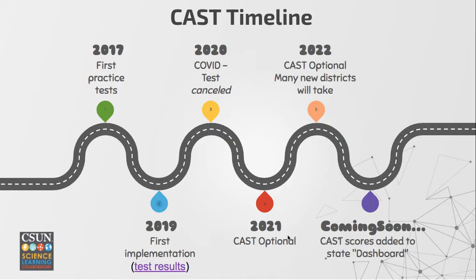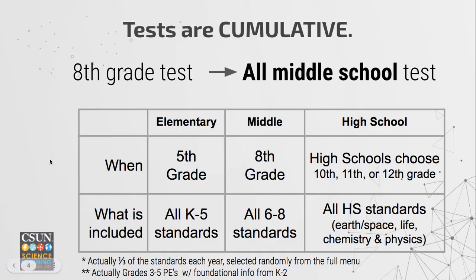In 2021 it was optional but many districts chose not to take it. This time around it's optional in 2022 but many districts are actually choosing to take it so they can get back on track with their science teaching. Coming soon in a couple of years, the CAST scores are going to be added to the state's dashboard, so you'll be able to see right alongside ELA and math just how well your students are doing in science.